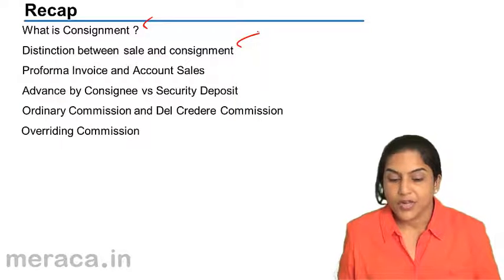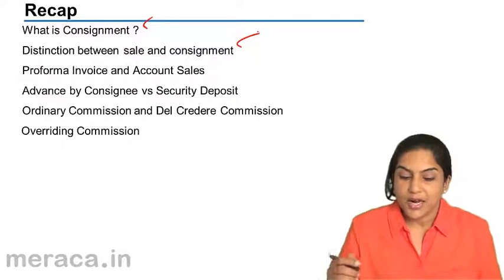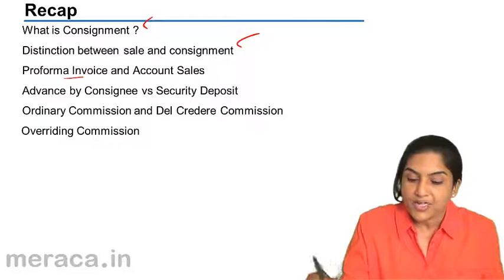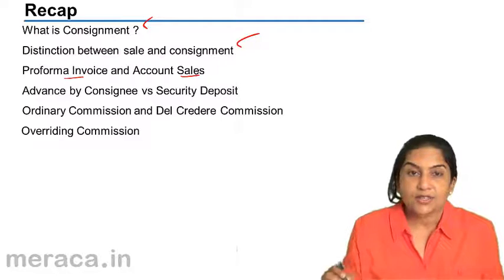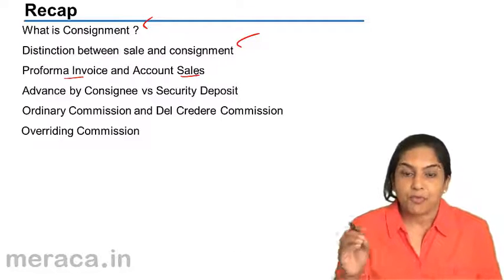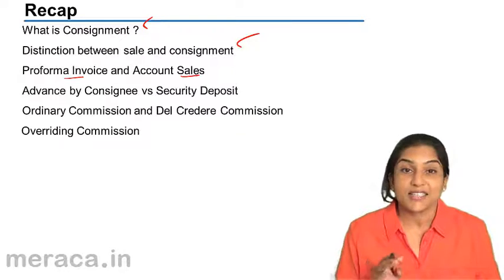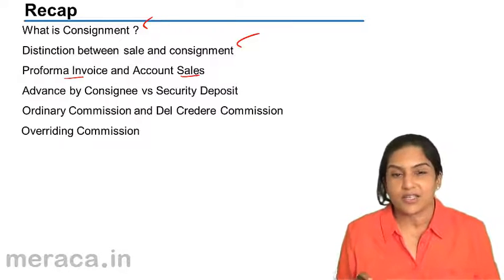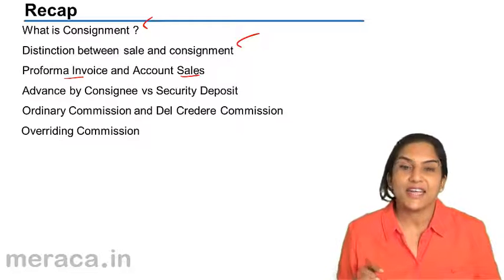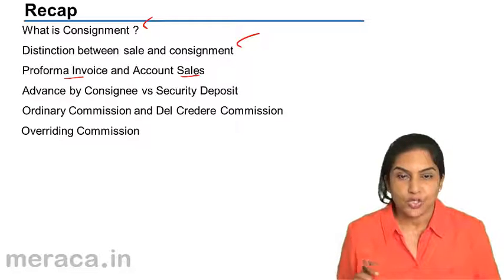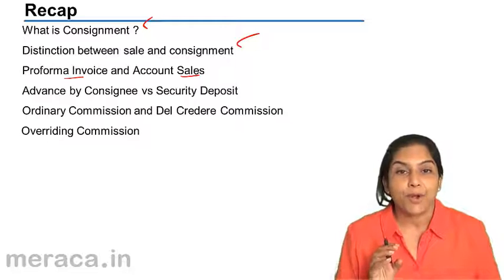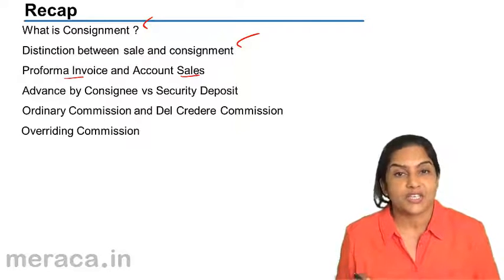We also understood a pro forma invoice and an account sales. A pro forma invoice is a statement sent by the consignor to the consignee containing the details of the goods being sent and the cost of those goods.